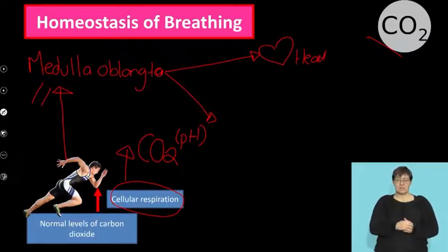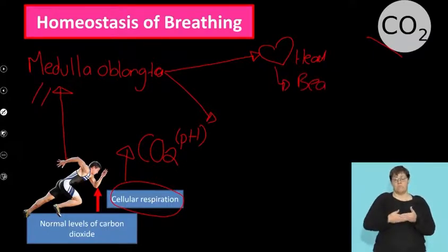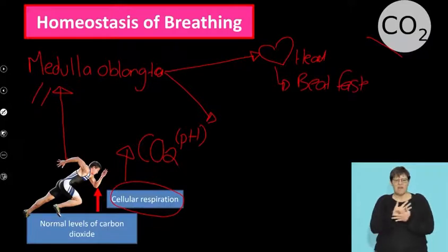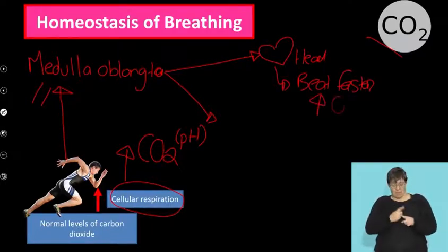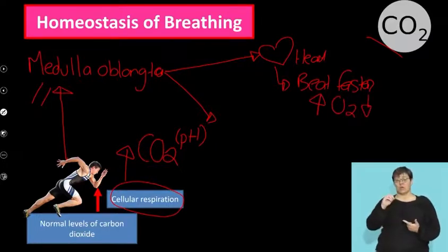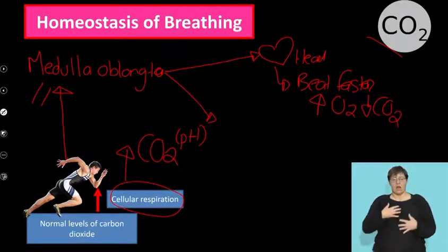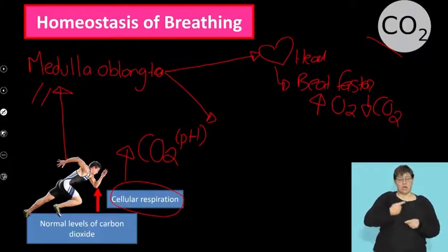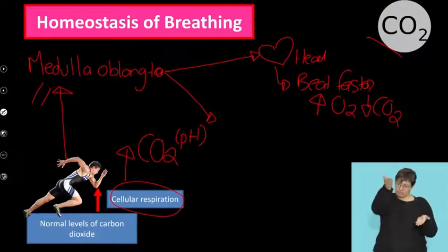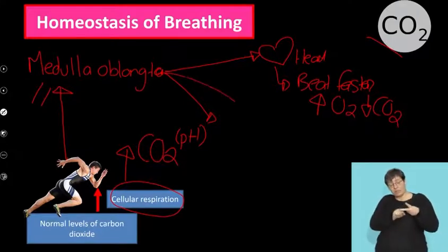The first organ it signals is the heart. It tells the heart: you need to beat faster. Why? Very simply — what am I going to get in? I'm going to get oxygen into my body quicker. And what am I going to get out? I want to get the carbon dioxide to my lungs quicker. I'm sure you've noticed after exercise why your heart is beating fast — it's beating to get your carbon dioxide levels down.